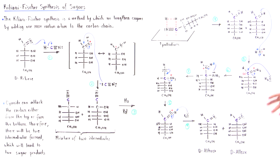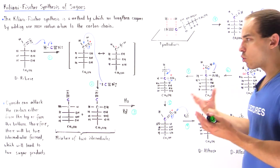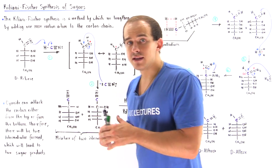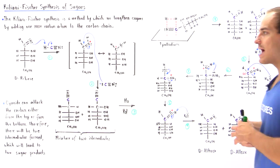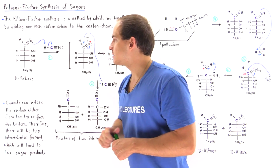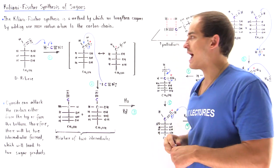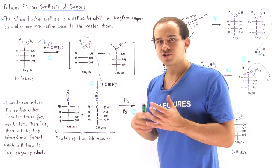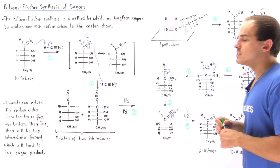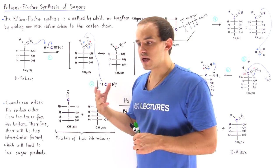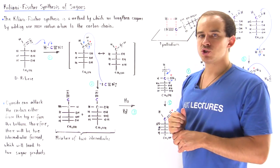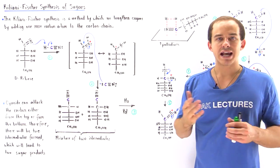Notice that D-altrose and D-allose are both part of a category known as aldohexoses. That means the products have one more carbon atom compared to our reactants. D-ribose has only five carbon atoms, it's an aldopentose, and these are aldohexoses with six carbon atoms. This reaction is known as the Kiliani-Fischer synthesis of sugars. It's the method by which we lengthen our sugar molecules by adding one more carbon atom to that carbon chain of that initial sugar.